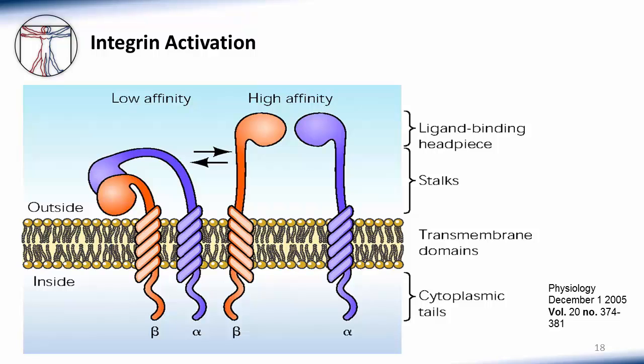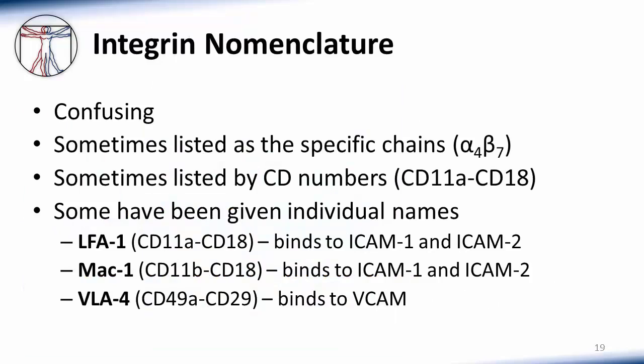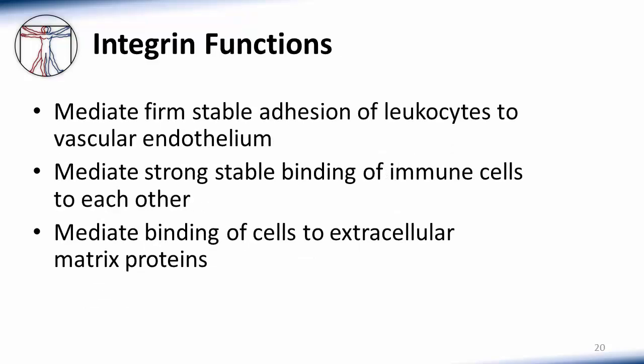Integrin nomenclature can be confusing. There are several different ways that specific integrins are identified, and the major immune integrins have been given specific names you will become familiar with as we progress through this course. Integrins have three major functions: they mediate firm, stable adhesion of leukocytes to vascular endothelium; they mediate strong, stable binding of immune cells to each other; and they mediate the binding of cells to extracellular matrix proteins.